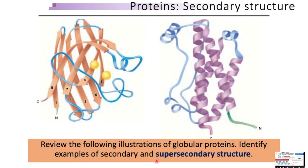Here is a review question. In this illustration, two polypeptide chains are shown. Can you please identify what type of secondary and super secondary structures are present? Please take a moment and try to identify them.